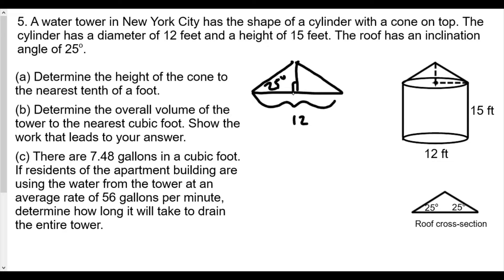This measurement here for this triangle would be 6. To find the height, we have to fall back into our trigonometry. We know the angle is 25 degrees, we have the leg opposite and the leg adjacent, therefore we're going to use tangent.